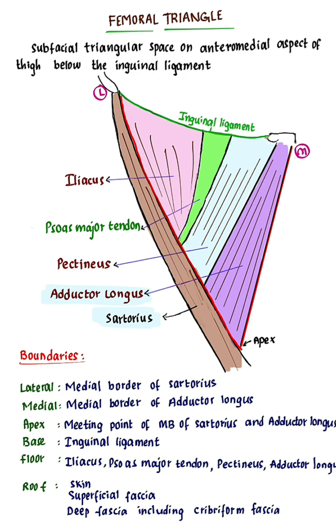Boundaries of the femoral triangle. The lateral boundary is formed by the medial border of sartorius. You can see this is the sartorius muscle — its medial border forms the lateral boundary.